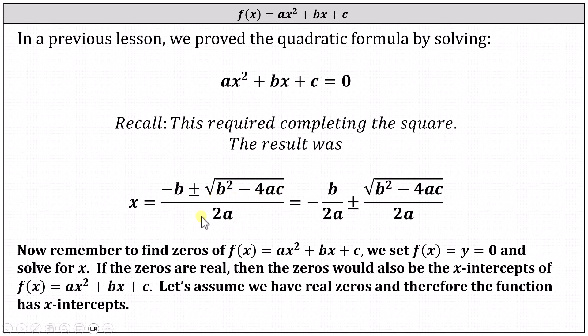If we break this up into two parts, we have x = -b/2a ± √(b² - 4ac) / 2a.